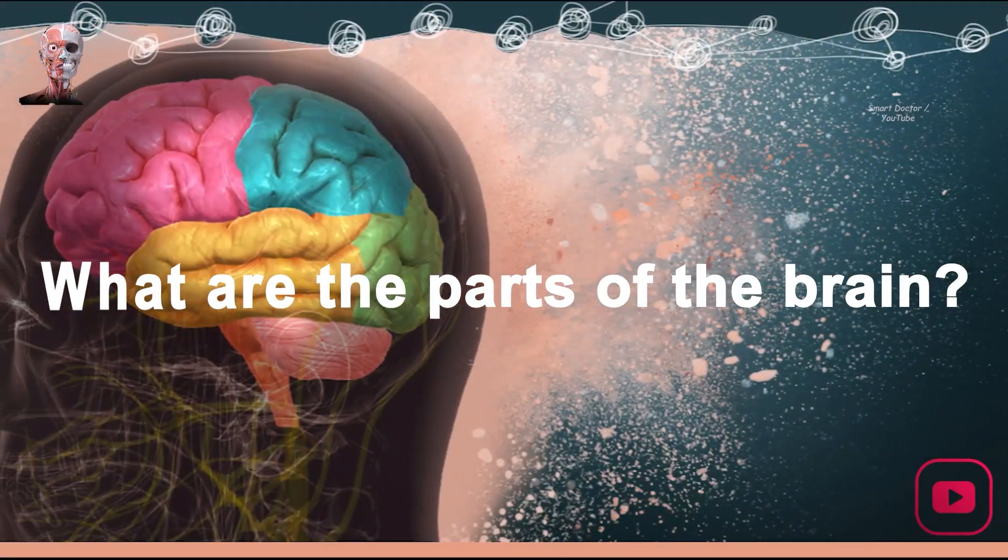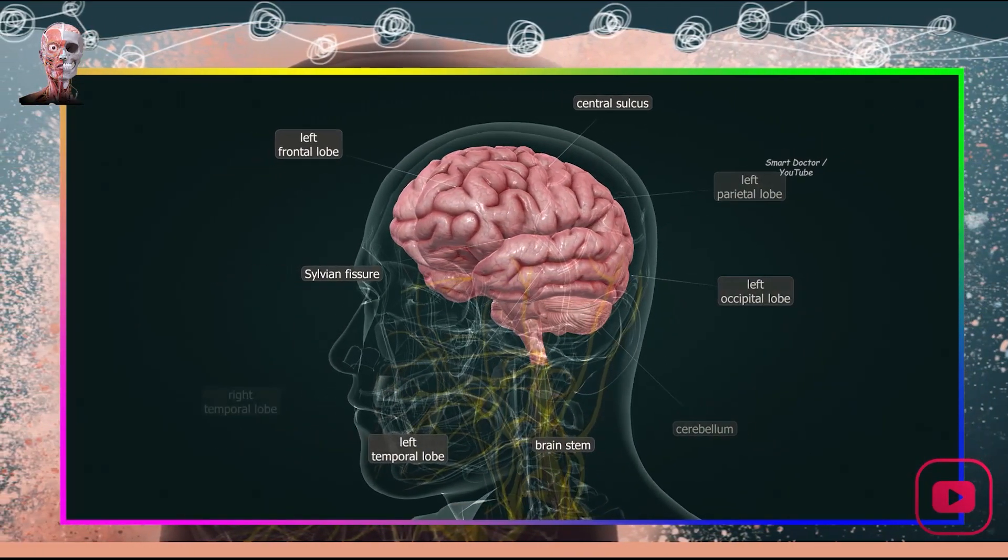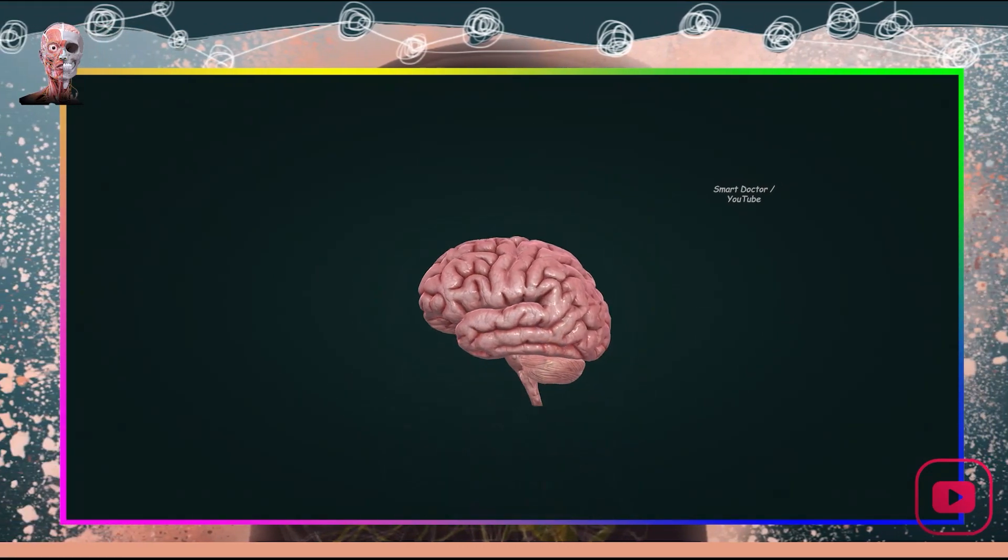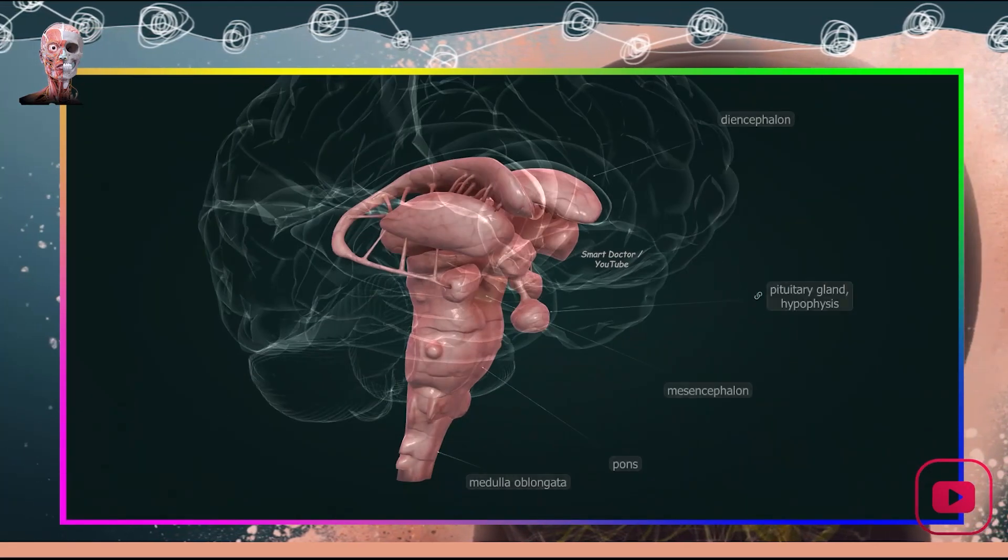What are the parts of the brain? The main parts of the human brain are the following: cerebrum, telencephalon, brain stem, midbrain, mesencephalon, pons, medulla oblongata, diencephalon, thalamus, hypothalamus, cerebellum.